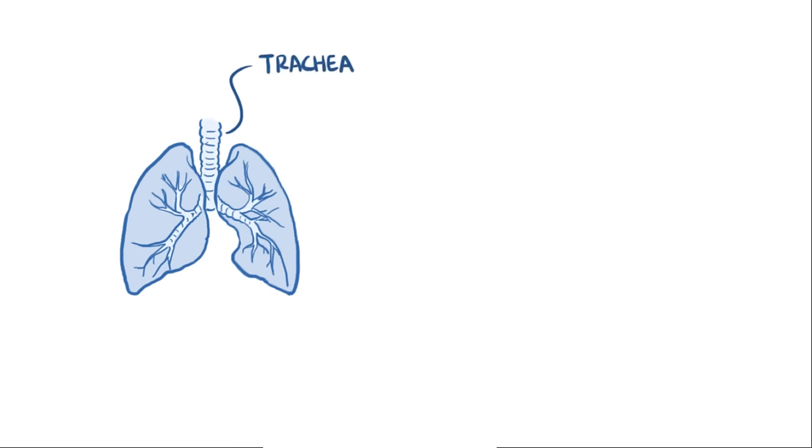If we take a look at the lungs, you've got the trachea, which branches off into the right and left bronchi, and then continues to branch into thousands of bronchioles.